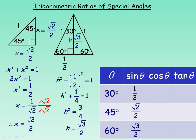Now for the cosine, starting with cosine of 30°. Cosine is adjacent over hypotenuse. For the 30° angle, the adjacent side is root 3 over 2, divided by the hypotenuse of 1, so cosine 30° = root 3 over 2. For cosine of 45°, the adjacent is root 2 over 2, divided by 1, so cosine 45° = root 2 over 2 — notice sine and cosine of 45° are the same. For cosine of 60°, the adjacent is one half, divided by the hypotenuse of 1, so cosine 60° = one half.